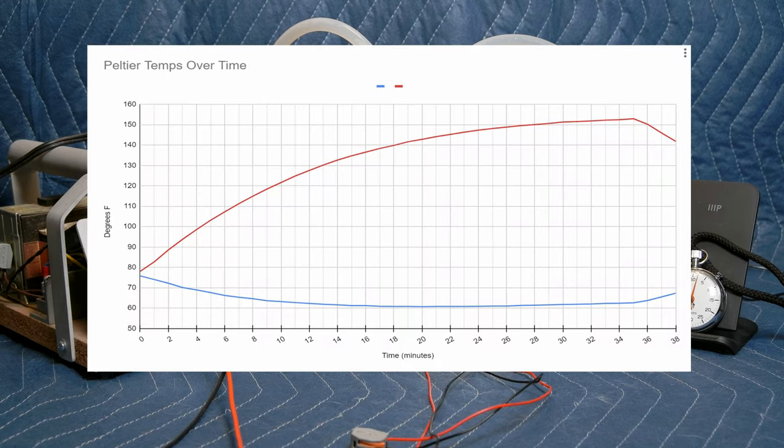The hot side got hotter than the cool side got cooler. That's the inefficiency part. If the two curves were equal but opposite, you'd have 100% efficiency.